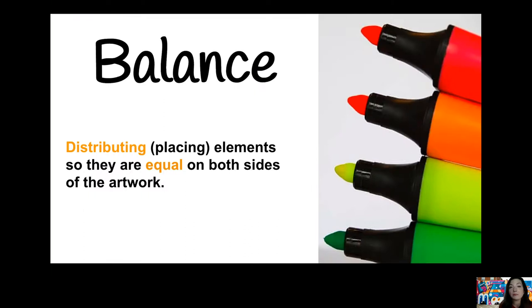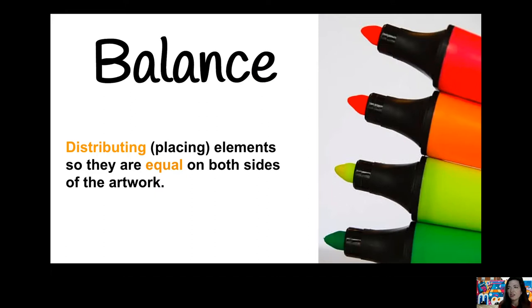Now let's talk about balance. Balance is when you distribute or place elements so that they are equal on both sides of the artwork. So if you were to divide an artwork in half, you would be able to feel that each side has an equal amount of things going on in it — an equal number of elements. It's not like one side of the paper has nothing and you drew everything over to the right.